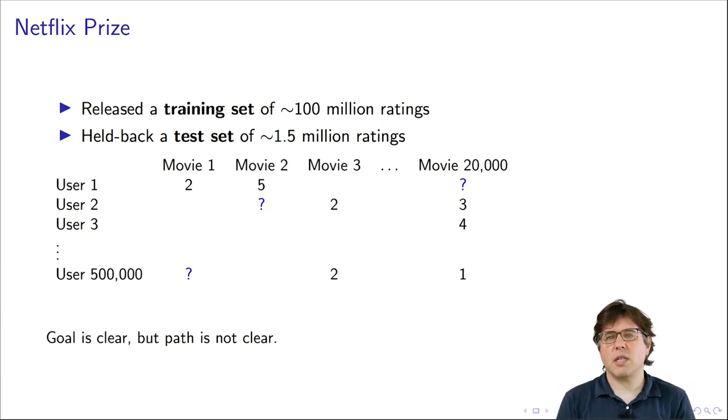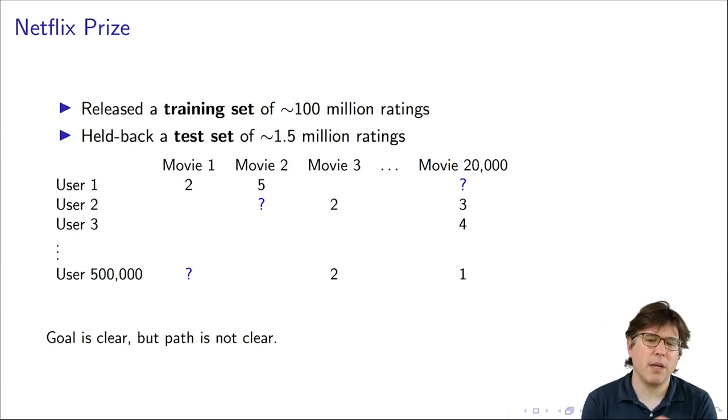So you can think about this data as a big matrix. It had about 500,000 users and about 20,000 movies. And so a lot of the entries in that matrix are blank. Some of those show the number of stars. For example, this might say user 1, movie 1 gave it two stars. This might be someone who movie 1 might be Star Wars, and the user didn't like Star Wars that much. So the challenge is given the pattern of these movie ratings, how do you predict the held out data, the data here represented in blue question marks. So here the goal is very clear. Predict what's in the test set. But how you do it is not very clear.